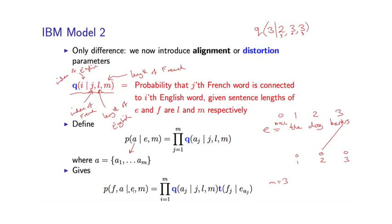The final form of the model is the joint probability of F and A conditioned on E. This is a product from J equals 1 to M of Q times T, where the T terms are exactly the same as before — T of F sub J given E of A sub J.